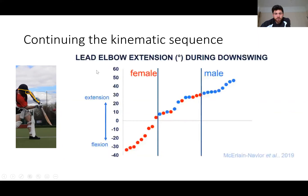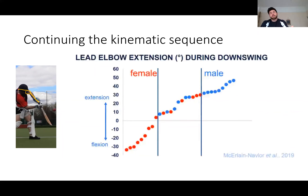Continuing the kinematic sequence — there's a difference between men and women. Men extend the elbow during the downswing, while females actually begin flexing. We want to extend this sequence as long as possible, coaching the pelvis to move and then the arms to extend as far as they can — this creates the maximum amount of velocity on the bat. Females have been coached in golf to be able to extend, but we haven't seen that in the female game in cricket yet.